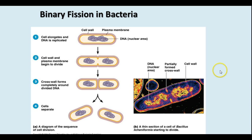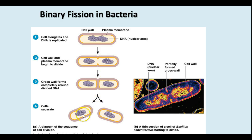Bacteria reproduce by binary fission. Most of the time this is basically a cloning process — the DNA is replicated, and then the two chromosomes attach to the plasma membrane. As the cell continues to grow, the cell wall and plasma membrane begin to divide in a form of cytokinesis. A cross wall forms and separates them into two separate cells. Here you can see a photograph of bacteria in the process of dividing.